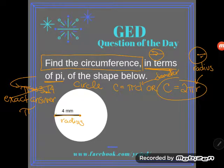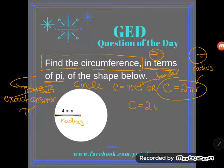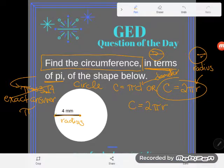Our life would probably be easier if we use the formula with radius in it. Now would I get a wrong answer if I use the other one? No, I'd just have an extra step. So C is equal to 2 pi r.